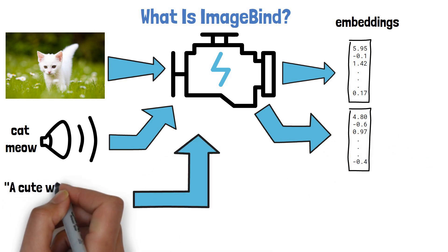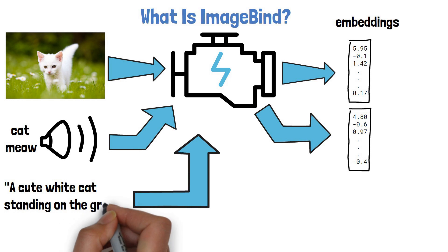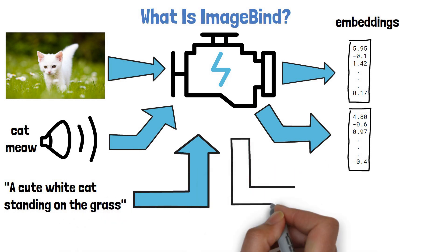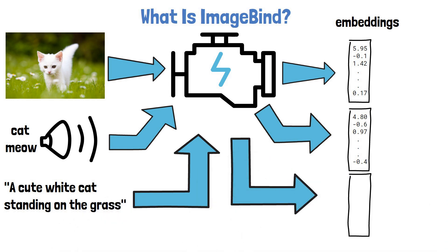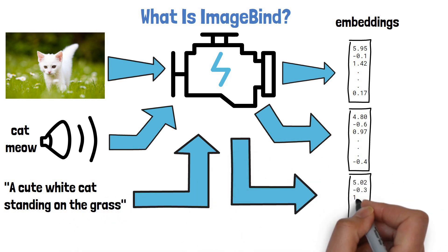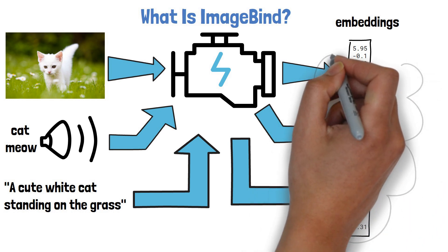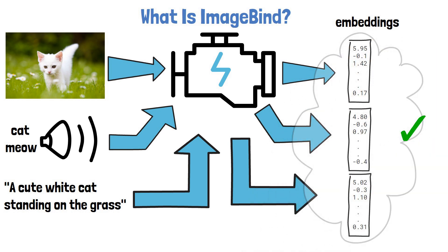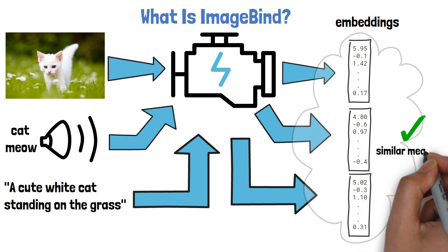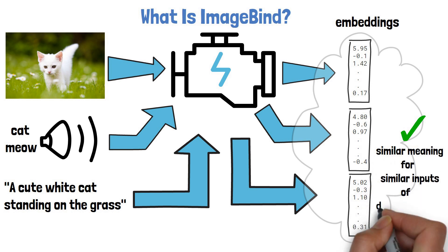Similarly, we can also provide text describing a white cat standing on the grass and also get an embedding. With ImageBind, the embeddings we get are not identical, but they share a common embedding space, and each output grasps a similar meaning related to the different cat input.